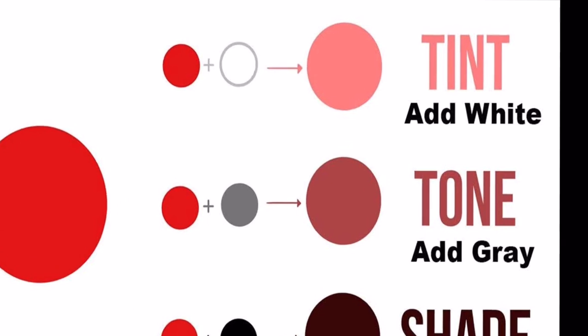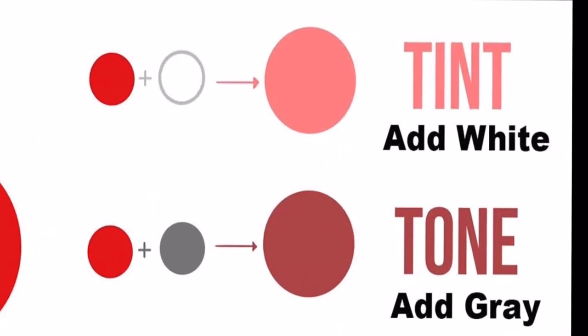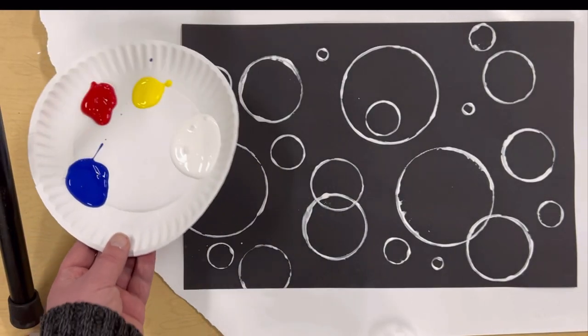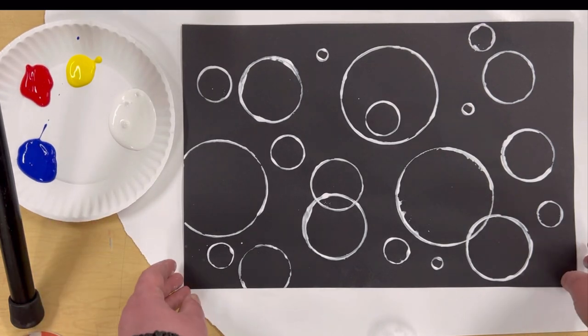For this project we're just gonna work with tints. We're gonna add white to our colors. Adding white or black to a color doesn't change a color. If I add white to blue it's still blue. If I add black to blue it's still blue. So we're gonna use tints for this only. So we're only gonna mix our colors with white.